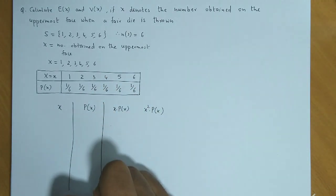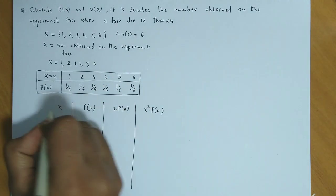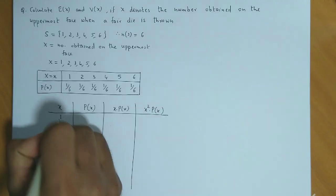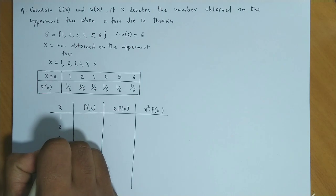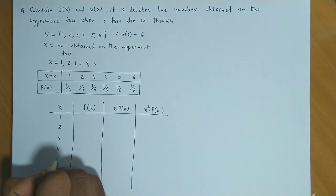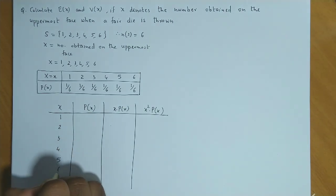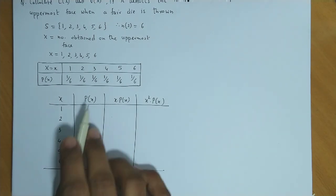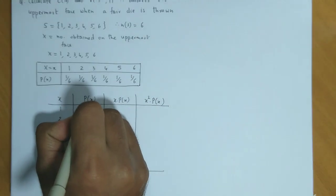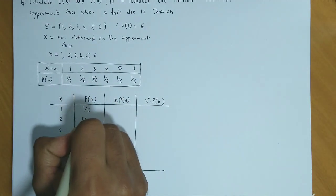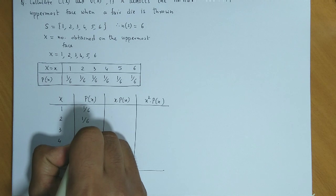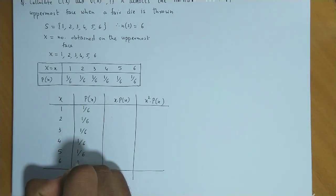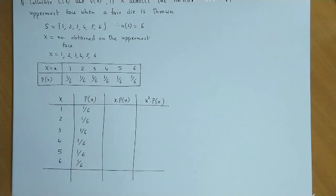So we have prepared this table. The values of X are 1, 2, 3, 4, 5, and 6. The probability for each of them is 1/6 — each P(X) is 1/6.